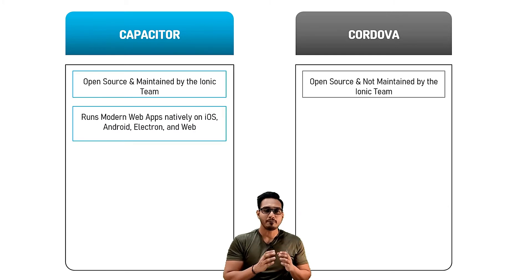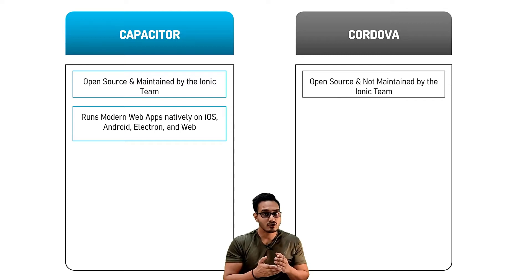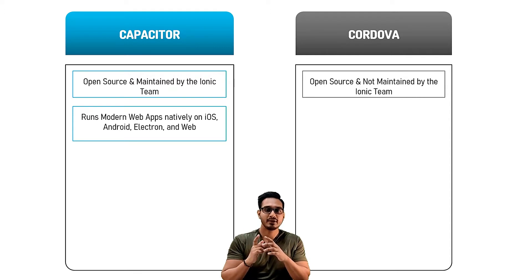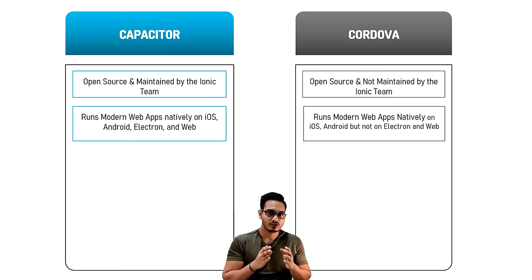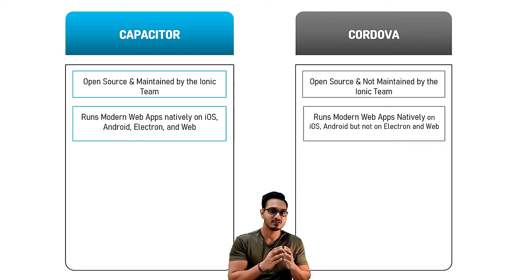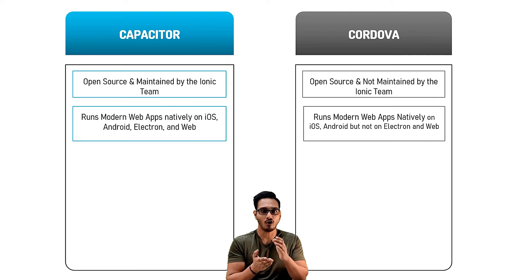The next difference is that Capacitor runs modern web applications natively on iOS, Android, Electron, and Web. It can create applications for iOS and Android, build desktop applications, and also build PWAs. In contrast, Cordova is used to run modern web applications natively on iOS and Android only — it does not support Electron, web, PWAs, or desktop applications.